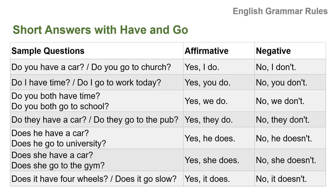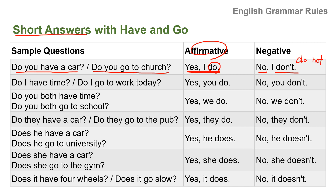When we have questions, we can answer with short answers. Short answers with have and go: Do you have a car? Yes, I do. Do you go to church? Yes, I do — affirmative. We use 'do'. Do you have a car? No, I don't — a contraction of 'I do not'. Do I have time? Yes, you do. No, you don't. Do I go to work today? Yes, you do. No, you don't. Do you both have time? Yes, we do. No, we don't. Do you both go to school? Yes, we do. No, we don't. Do they have a car? Do they go to the pub? Yes, they do. No, they don't.